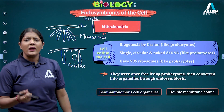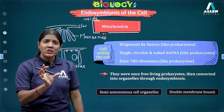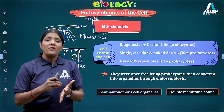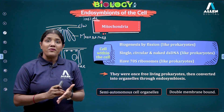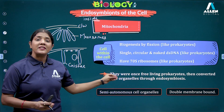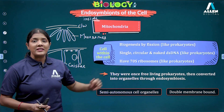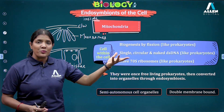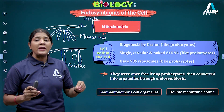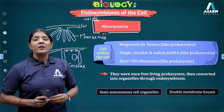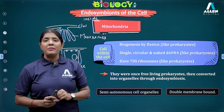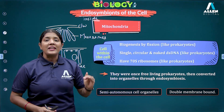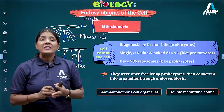Mitochondria are called semi-autonomous cell organelles — semi meaning partially independent. They are partially independent for their own function: synthesis of ATP, performing Krebs cycle, and performing the electron transport chain. Mitochondria synthesizes its own enzymes using its own DNA. However, for certain membrane proteins, mitochondria is dependent on the nuclear DNA. It is double membranous, evolved from prokaryotes that had a cell wall and cell membrane, now having an outer and inner membrane.